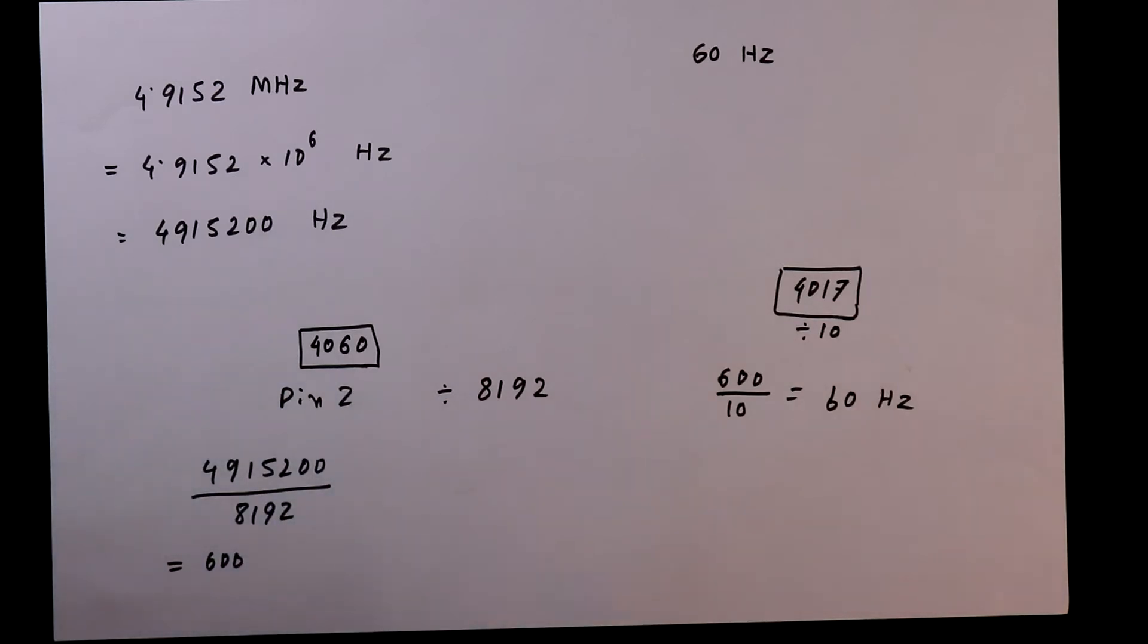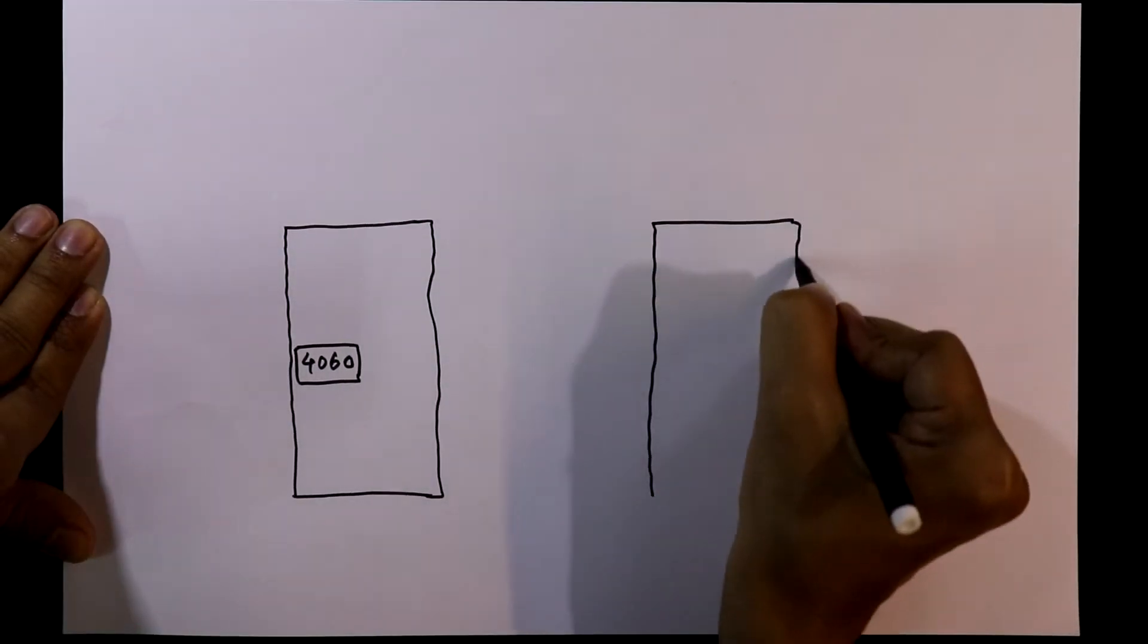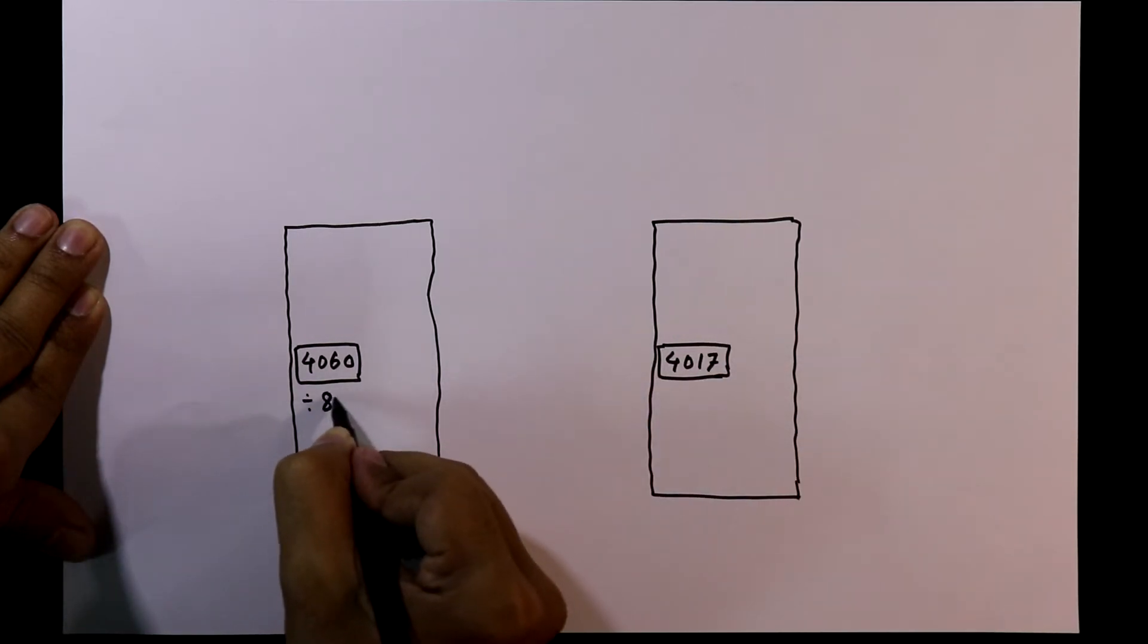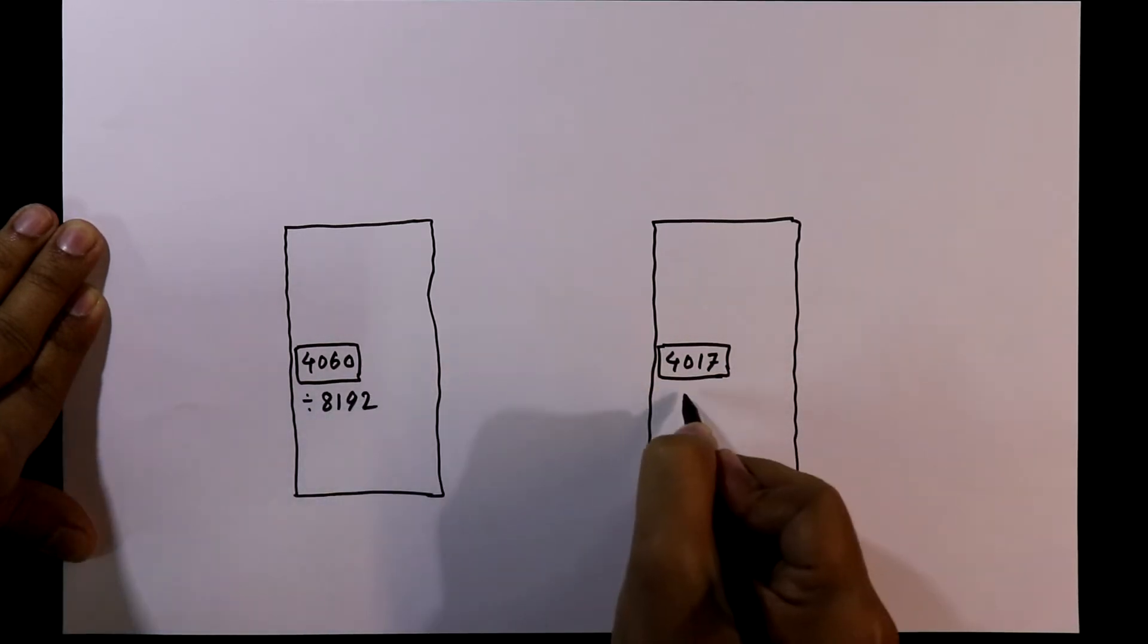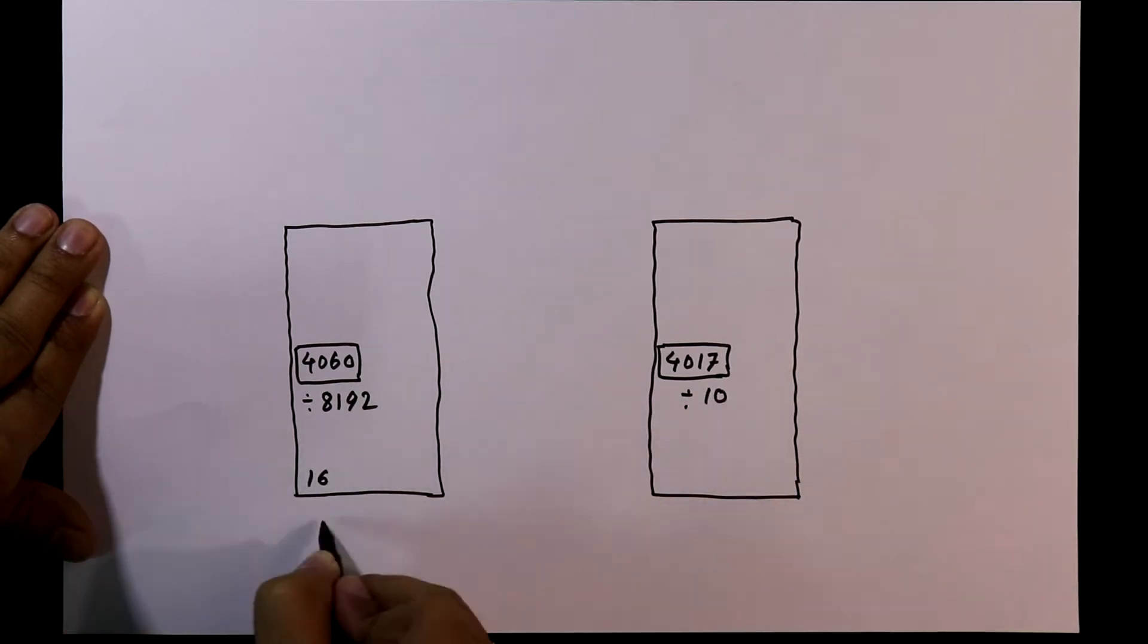Now we'll see the circuit diagram. Here it is IC 4060 and it is 4017. This is dividing a frequency by 8192 and this is dividing a frequency by 10. These are the power supply pins for both ICs.